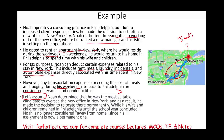Any transportation expense exceeding the cost of meals and lodging during his weekend trips back to Philadelphia is not deductible. Now, changing the scenario: Noah determines he is the best candidate to run the New York office and decides to relocate there permanently, even though his wife and children remain in Philadelphia until the school year ends. Once he decides to relocate permanently, New York becomes his home — he is no longer 'away from home,' so those expenses are no longer deductible.